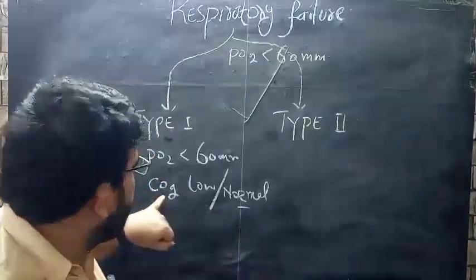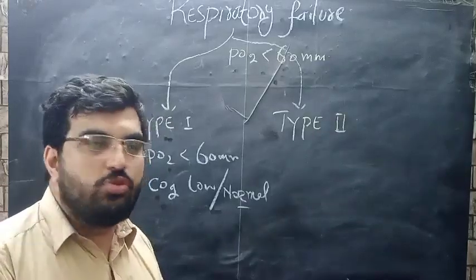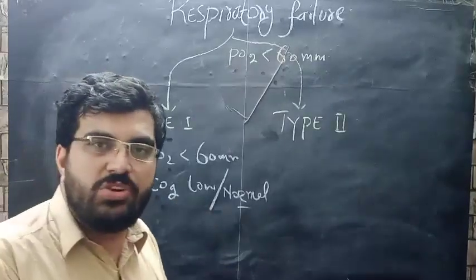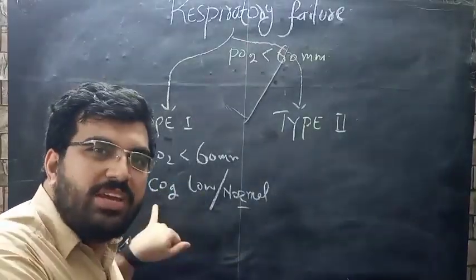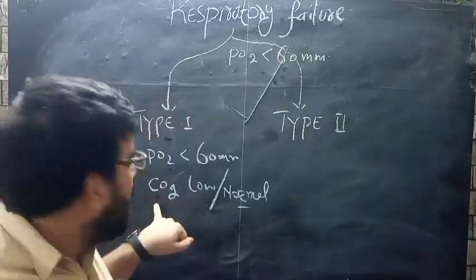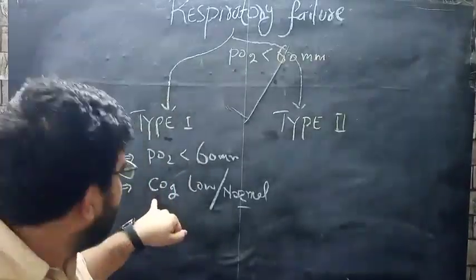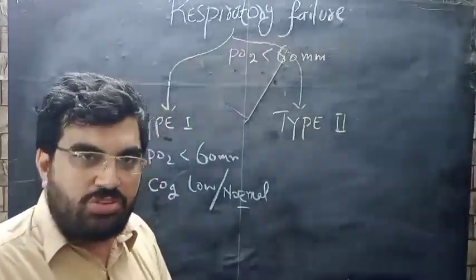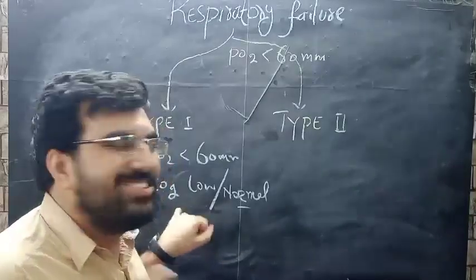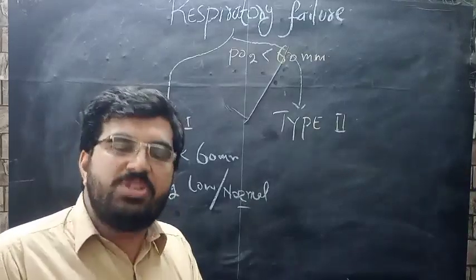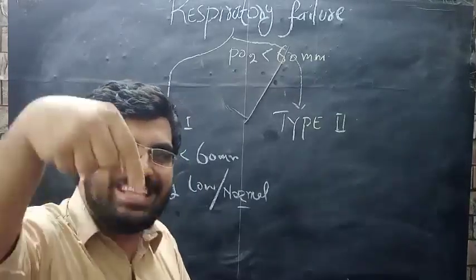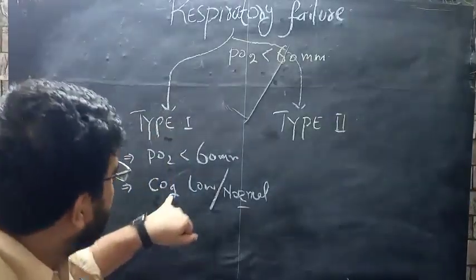To know the normal values of CO2, refer to my videos on ABG interpretation — a 22-minute video covering normal values, metabolic acidosis, metabolic alkalosis, respiratory acidosis, respiratory alkalosis, compensation formulas, and how the anion gap helps diagnose metabolic acidosis. The link is in the description below.